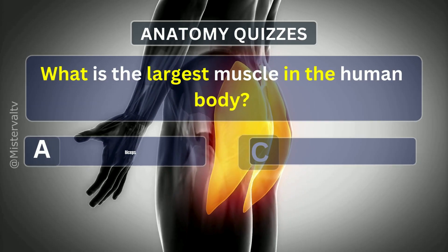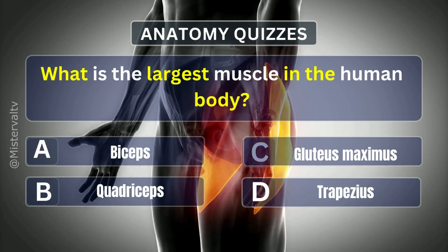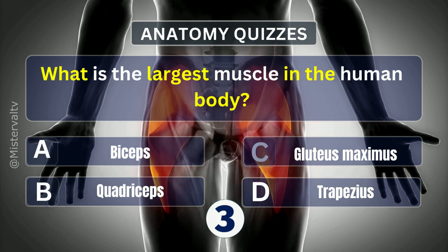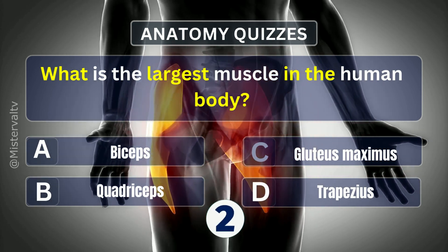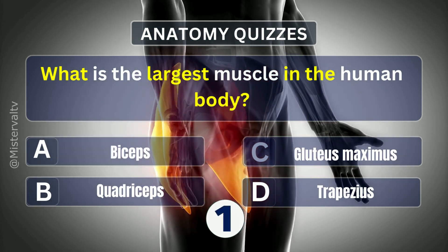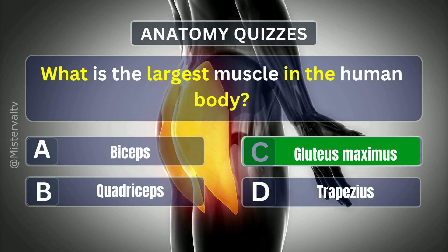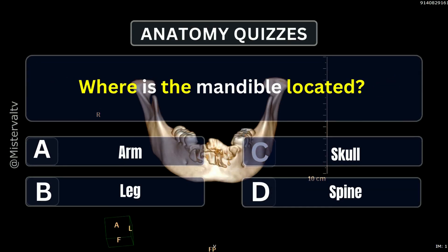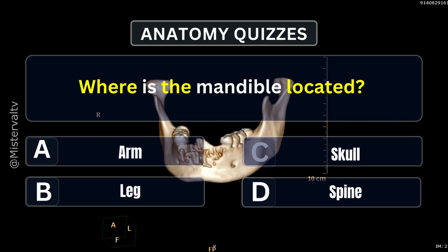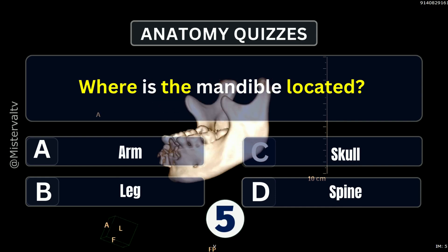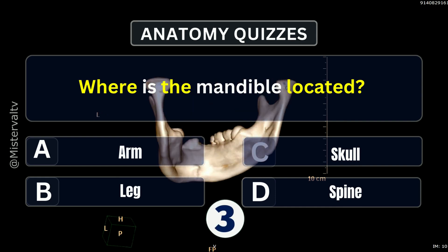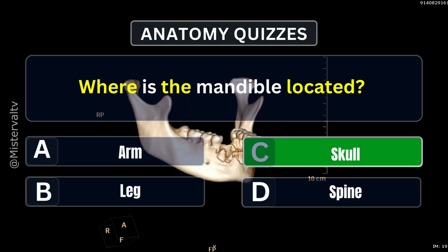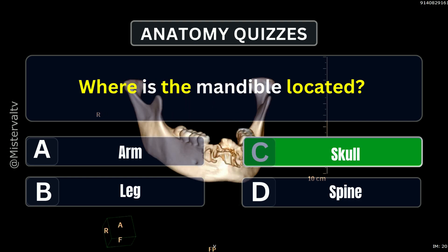What is the largest muscle in the human body? Answer. C. Gluteus maximus. Where is the mandible located? Answer. C. Skull.